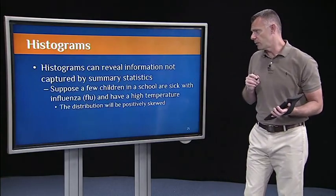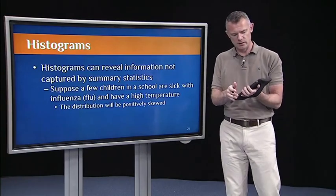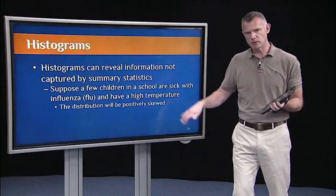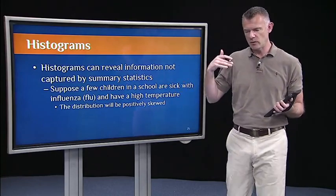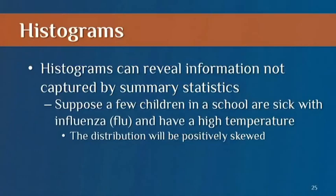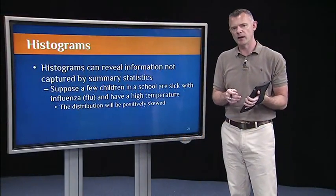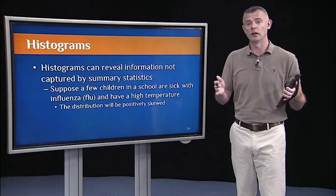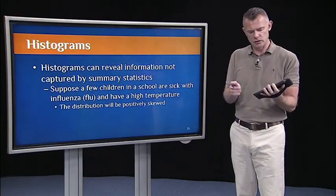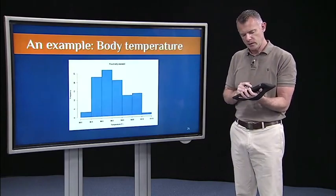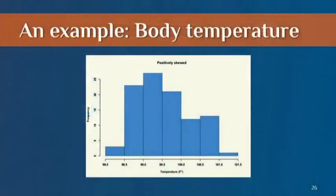Histograms can reveal a lot of information that's not captured by summary statistics. For example, assume a few kids in the class are sick — they have the flu and a really high body temperature. We might not capture that just by getting the average body temperature across the whole group, especially if it's a really large group. Those couple of sick kids won't really show up. But if we look at the histogram, we'll see one kid out here with a temperature over 101.